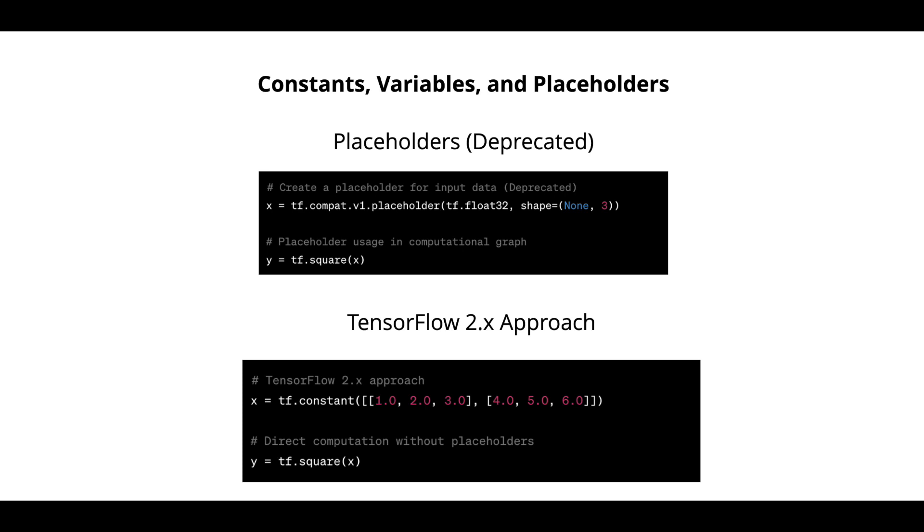Example of that is x equal to tf.constant and we have 1.0, 2.0, 3.0 and another matrix with 4.0, 5.0 and 6.0. Now you can do direct computation without any placeholders. You can just say y is equal to tf.square of x.